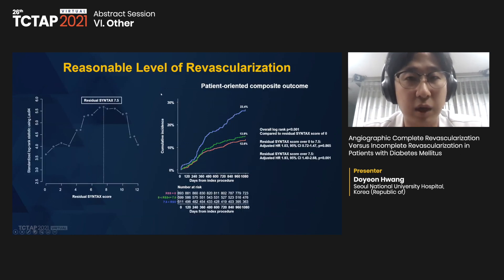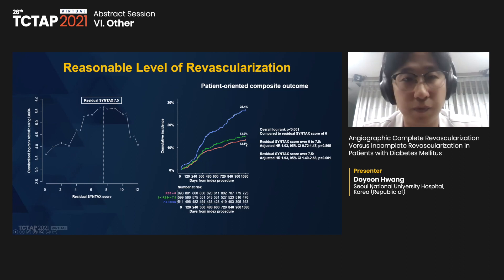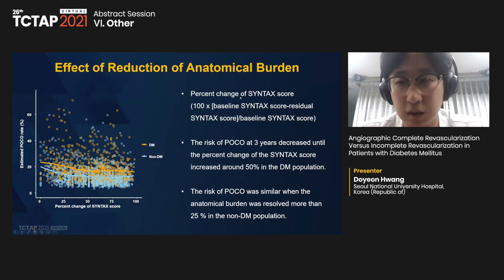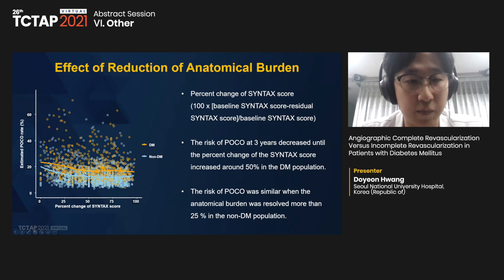We also evaluated the reasonable level of revascularization. A residual SYNTAX score of 7.5 or less was the reasonable level of revascularization in our study, and patients with a residual SYNTAX score below 7.5 showed comparable risk of POCO to the complete revascularization group. Additionally, the risk of POCO at three years decreased along with increasing percent change of SYNTAX score, up to approximately 50 percent in DM patients compared to 25 percent in non-DM patients.